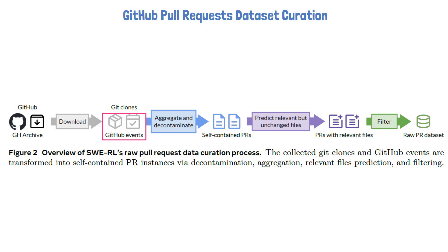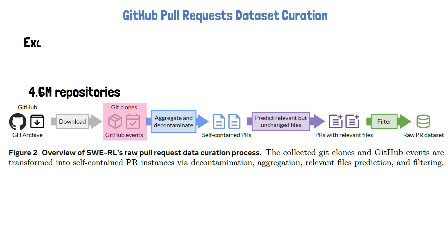To obtain the source code, the researchers cloned the repositories. This way, we get the commit history for each repository rather than a code snapshot. This process was done for 4.6 million repositories. An important note is that all repositories used by the SWE Bench benchmark are excluded, since this is the benchmark used to analyze the model performance, as we'll see soon.